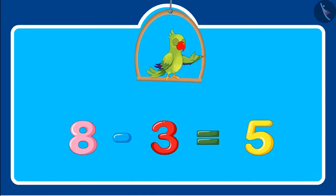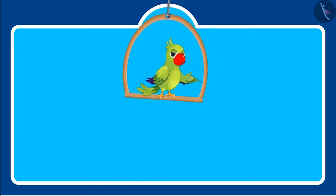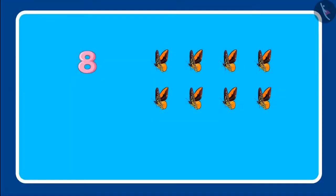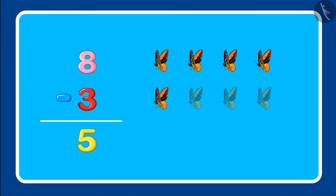Friends, do you know that we can write this in another way also? I will tell you. We can also write it in this way. First, there were a total of 8 butterflies, so we will write the total number on top. Then 3 butterflies flew away, so below the total number we will put the subtraction sign and write the number that got reduced. Then we will write the remaining number, which is 5 butterflies.